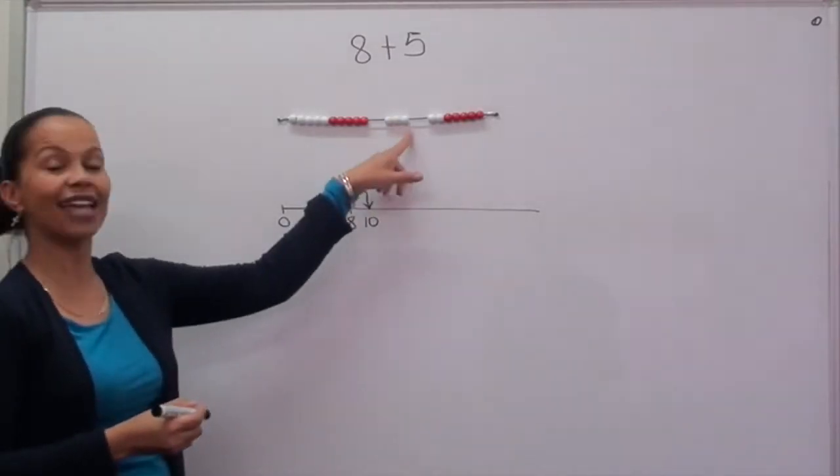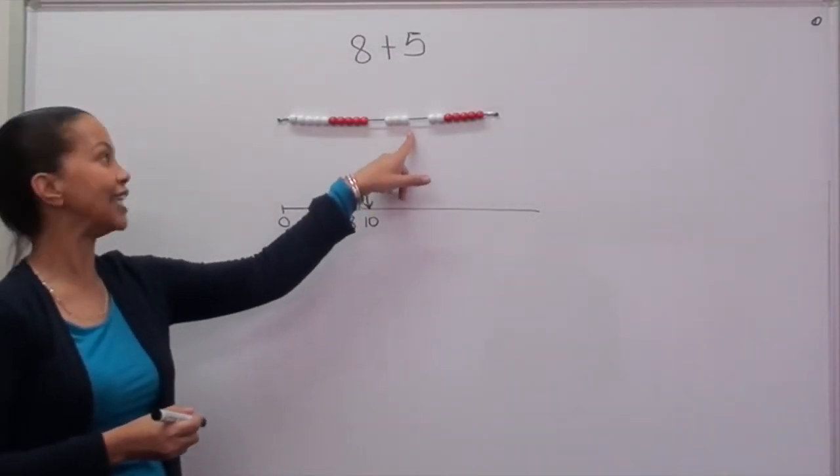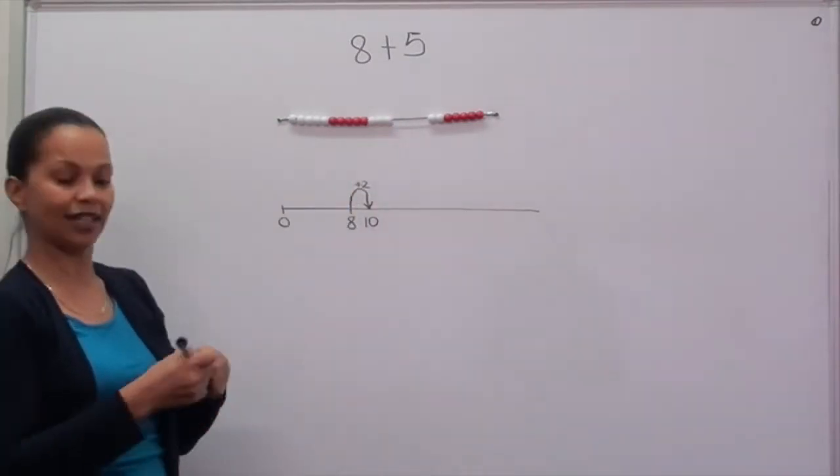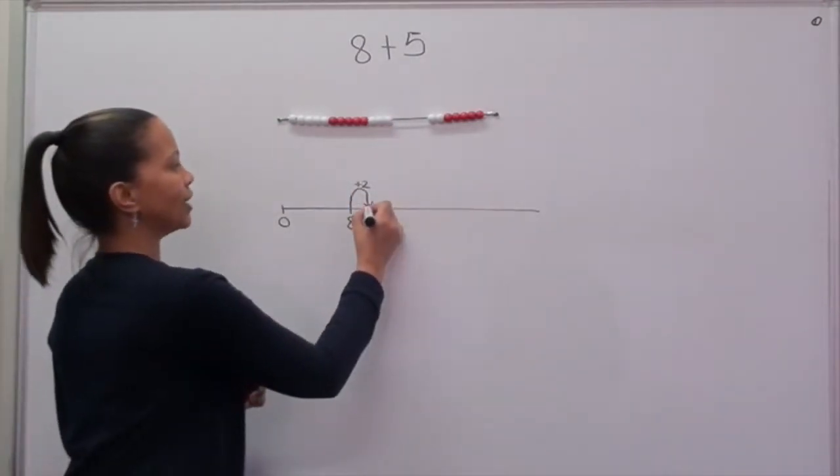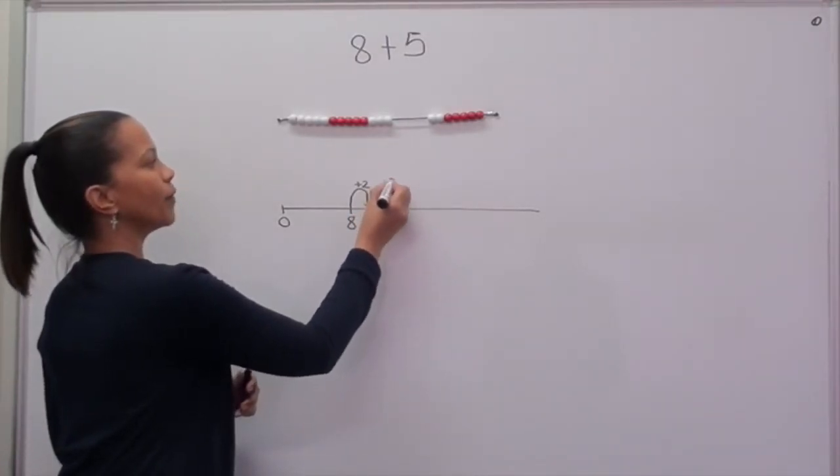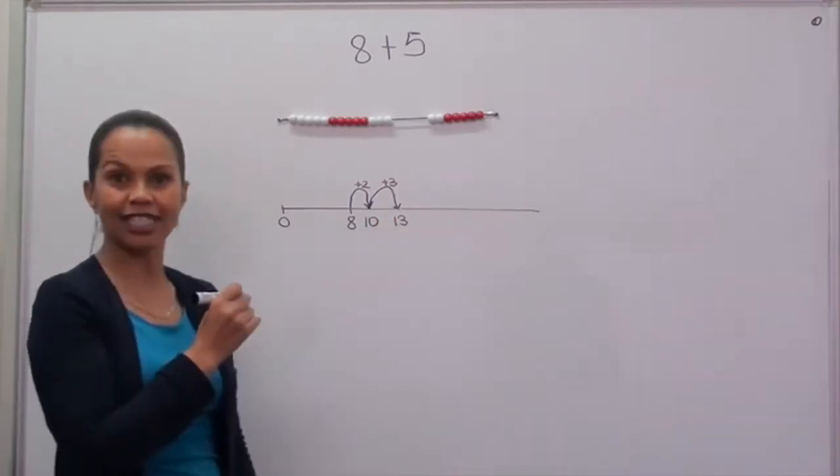What do I still need to add? That's right, I need to add 3. And 10 plus 3, I show it on my number line. From 10, I add 3 more and my answer is 13.